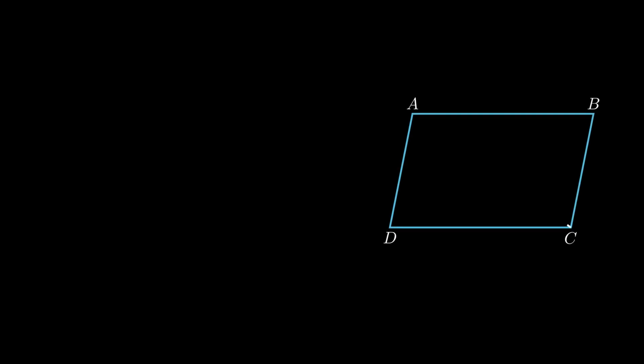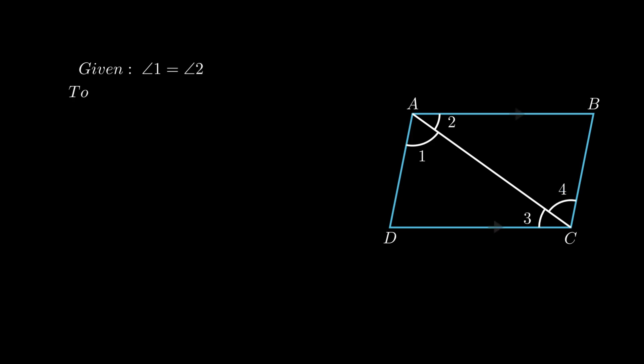The next problem states: diagonal AC of a parallelogram ABCD bisects angle A. We need to show that it also bisects angle C. Consider parallelogram ABCD where AB is equal and parallel to CD, and AD is equal and parallel to BC. As opposite angles of a parallelogram are equal, angle A = angle C and angle B = angle D.